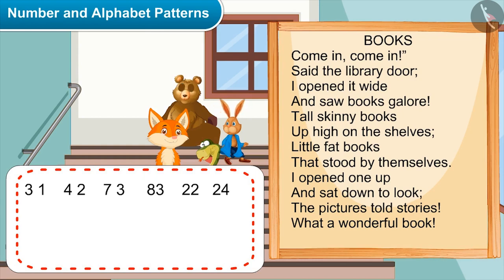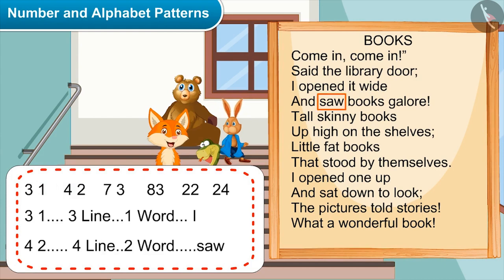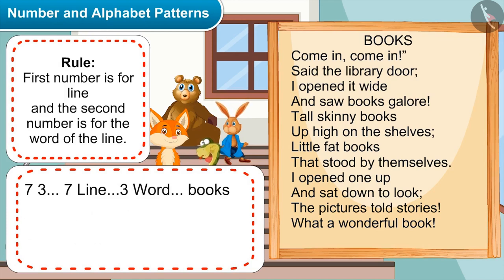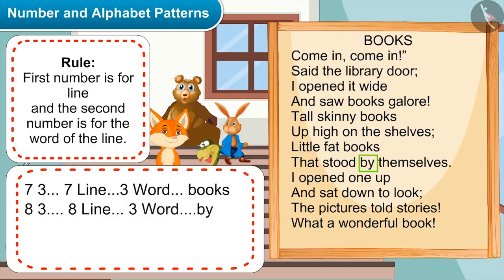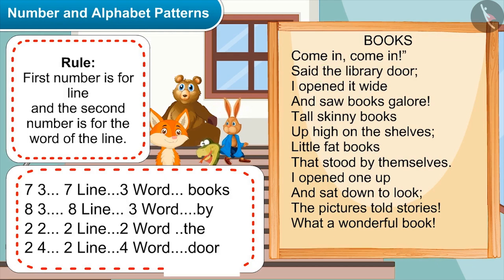Chatura, now please tell. Okay, listen carefully. 31 means third line, first word. So 4,2 will mean fourth line, second word. The rule is: the first number is for the line and the second number is for the word of that line. Yes, absolutely right. So 7,3 means seventh line, third word. Next, 83 means eighth line, third word. Then 2,2 means second line, second word. And 2,4 means second line, fourth word.